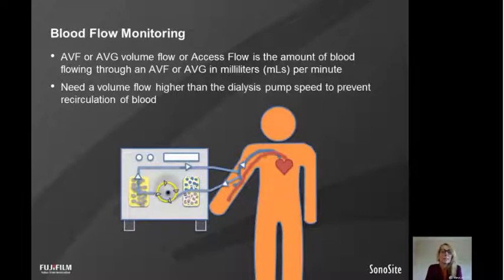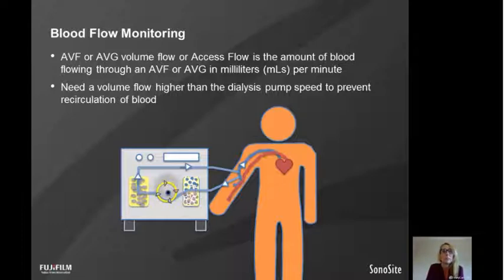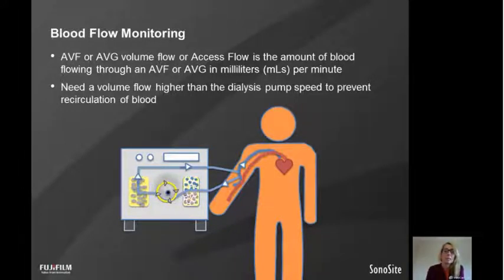In arteriovenous fistures and arteriovenous grafts, the volume flow — or what we call it in dialysis, the access flow — is the amount of blood flowing through an arteriovenous fisture or graft in millilitres per minute. We need a volume flow higher than the dialysis pump speed to prevent recirculation. For example, if the volume flow was 300 mLs per minute but we set the pump at 350 mLs per minute, we wouldn't be providing enough blood or we would be causing recirculation.